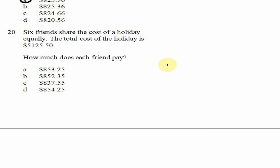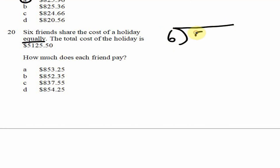Question 20, our final question: 6 friends share the cost of a holiday equally. The total cost is $5125.50. How much does each friend pay? They share equally among 6, so we divide 5125.50 by 6.